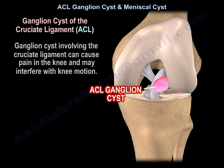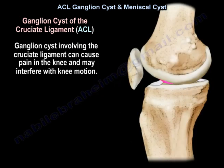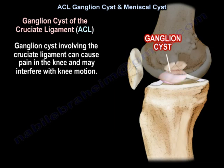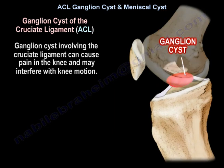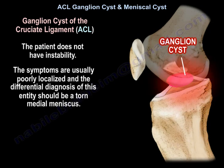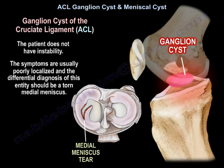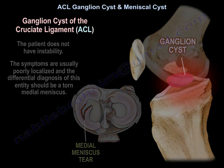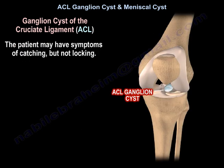The ganglion involving the cruciate ligament can cause pain in the knee and may interfere with knee motion. The patient does not have any instability. The symptoms are usually poorly localized, and the differential diagnosis should include a torn medial meniscus. The patient may have symptoms of catching but not locking.